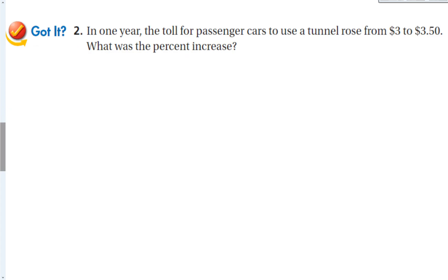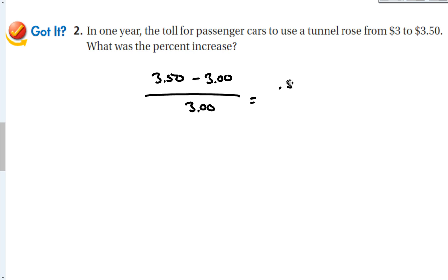In one year, the toll for passenger cars to use a tunnel rose from $3.00 to $3.50. What was the percent increase? (3.50 minus 3.00) over the original amount of $3.00 equals $0.50 over $3.00, giving approximately 0.17, or a 17% increase. So only 50 cents more, but that's a pretty substantial 17% increase.